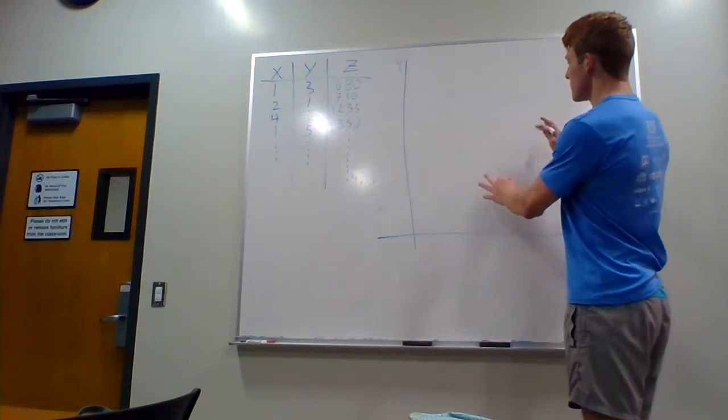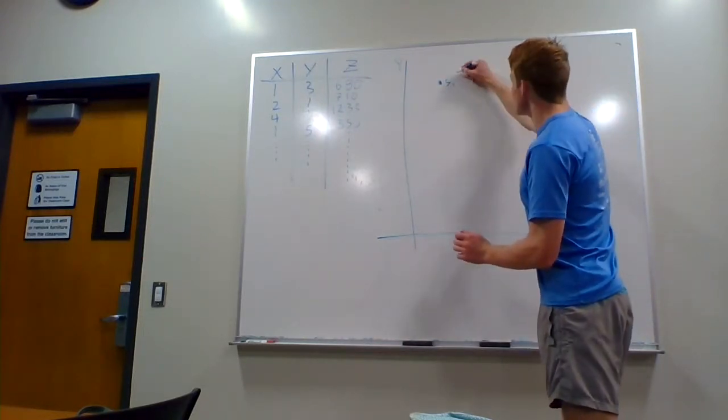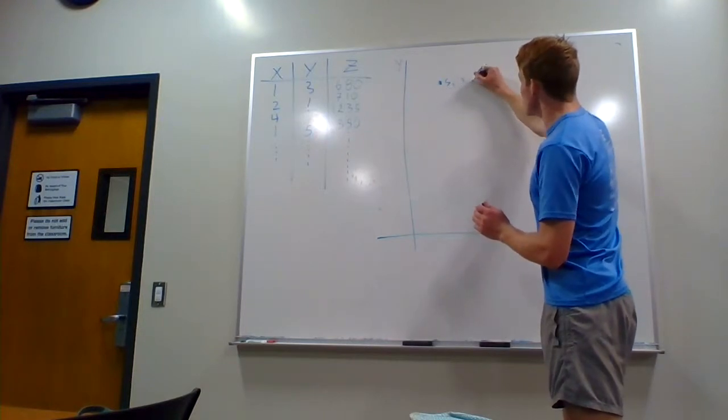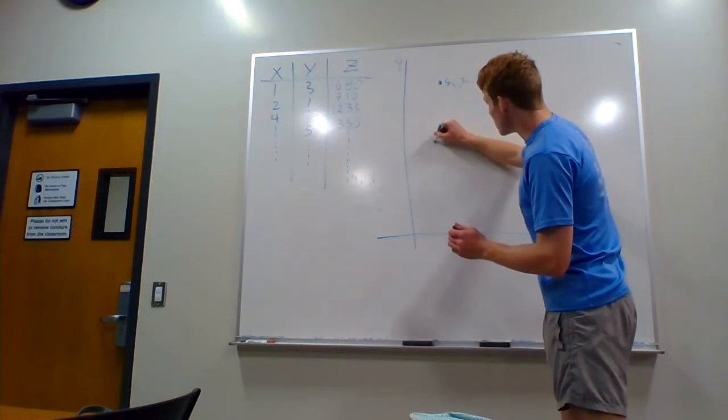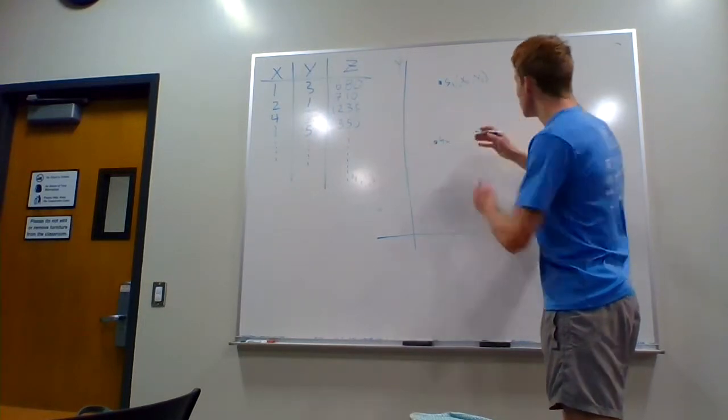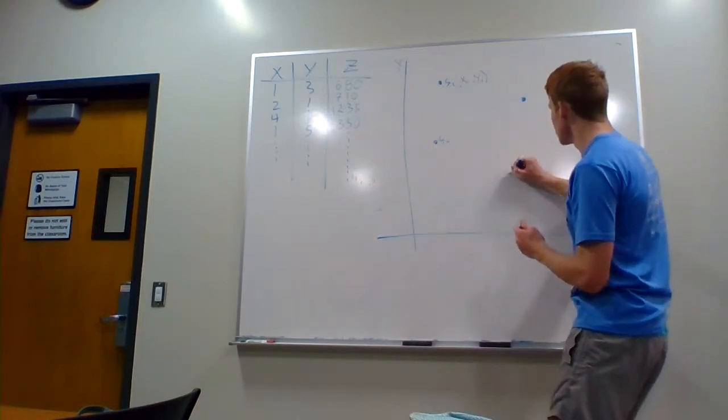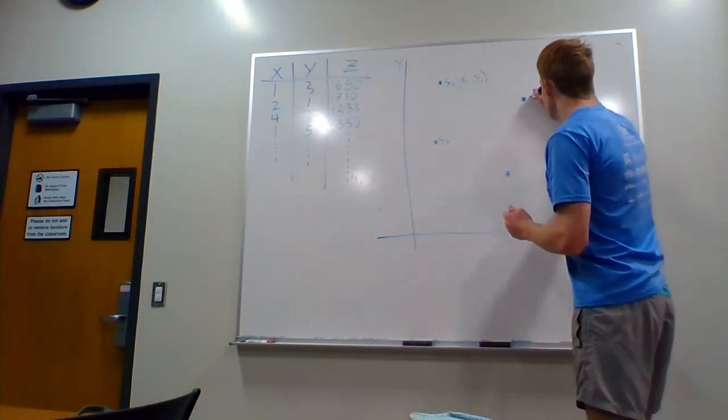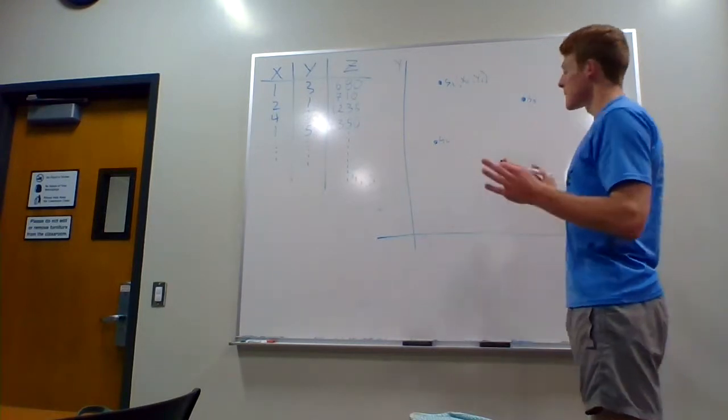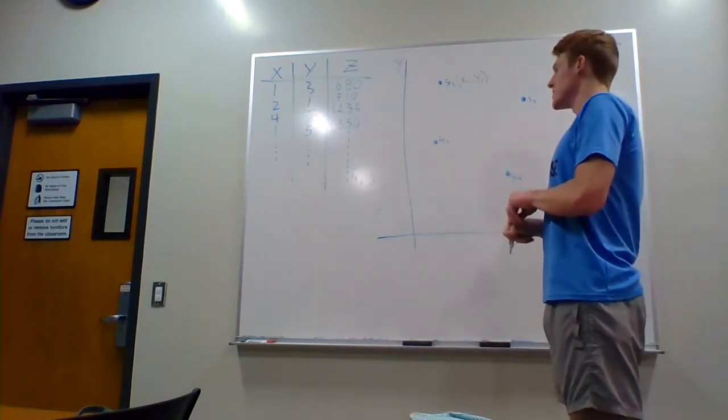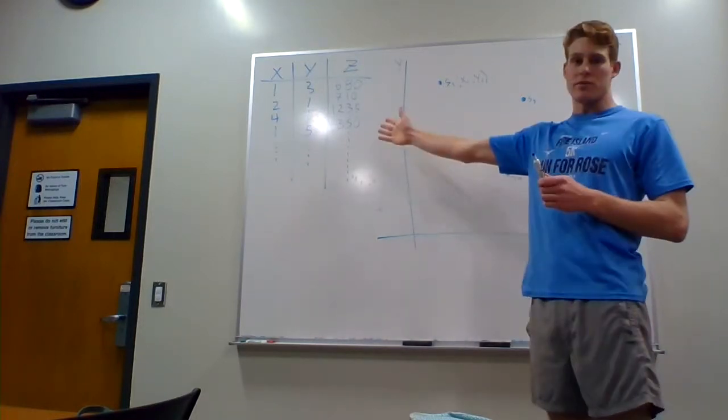So here you have your plane, and then you have a point right here. We're going to label that S1. So that's going to have the coordinates of X1, Y1. And then maybe we have a couple more here. We'll go S2, X2, Y2. I'm not going to write that out, but I'm sure you guys can comprehend that. So we have S2, S3, S4.